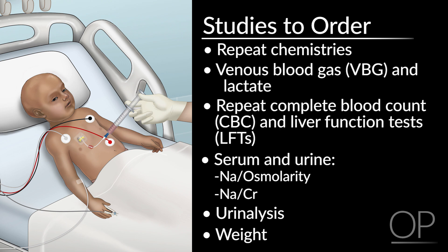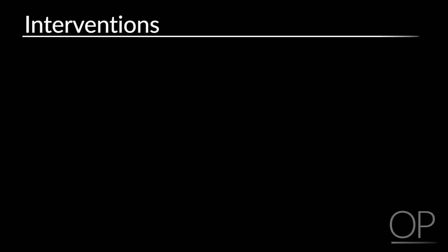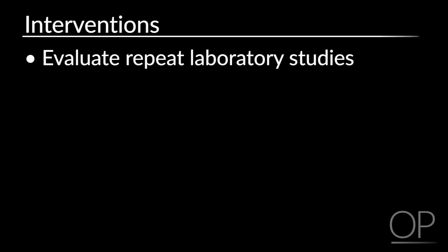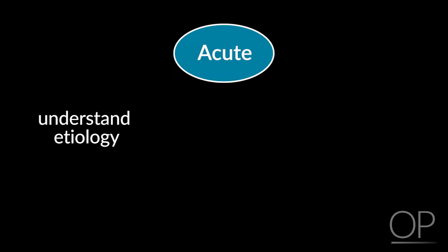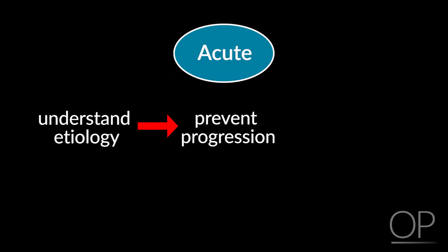A urinalysis will allow assessment of specific gravity and whether there are any blood or red blood cells in the urine. A weight may be appropriate if there are concerns for recent changes. Interventions include evaluating those repeat laboratory studies to determine whether the sodium change is real and may have worsened since the initial check. If the process is acute, act to understand the etiology, prevent progression, and slowly correct the course.